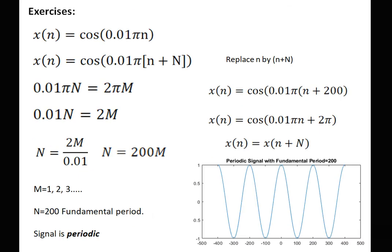Now we will see exercises on periodic and aperiodic signals. For x(n) = cos(0.01πn), we replace n by n + N, giving cos(0.01π(n + N)). We require 0.01πN = 2πm, so 0.01N = 2m, and solving gives N = 200m. Since N = 200 is a positive integer for m = 1, 2, 3, ..., the signal is periodic in nature.